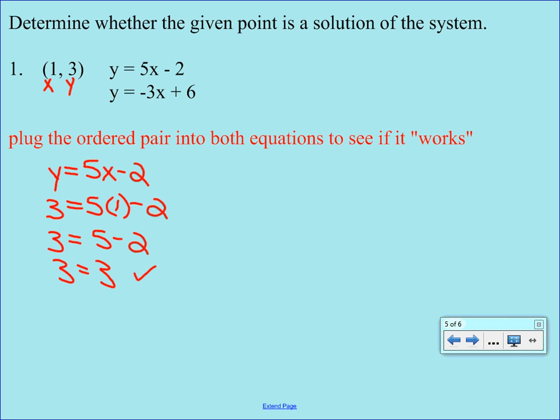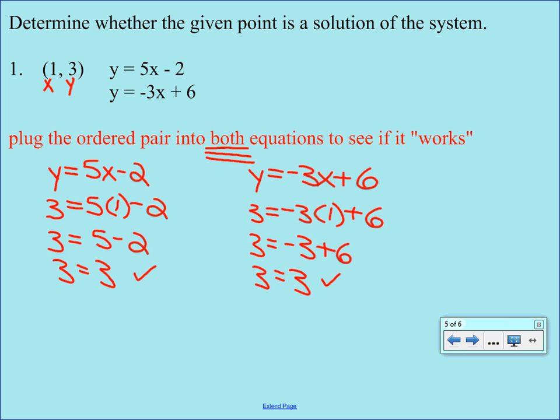But if you remember, we talked about the fact that the ordered pair has to work in both equations. So the fact that it worked in the first one is not enough. We have to also plug it into the second equation. And be careful, there's a negative there in front of that 3. Make sure that that gets brought along. So we're going to replace the y with 3. We're going to bring everything else down like we just said. Replace the x with 1. And then we're going to start to simplify. So the 3 comes down. Negative 3 times 1 is negative 3. We're going to add 6. We simplify again. And we get 3 equals 3.